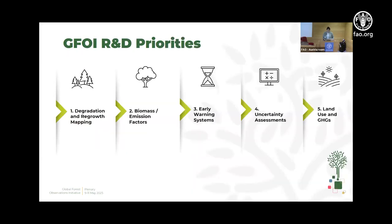Here are the current R&D priorities and the presentations we will see today. First, we have degradation and regrowth mapping, then biomass and emission factors, followed by early warning systems — also called deforestation alerts. There's also the cross-cutting topic of uncertainty assessments, and finally land use and greenhouse gas estimation. All of these topics have a list of subtopics under them, and there are other topics we consider in a separate category that are not priorities as of now.